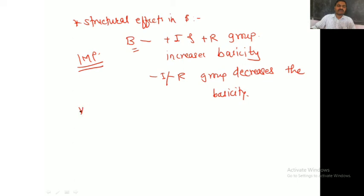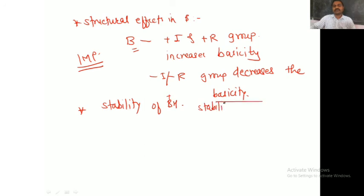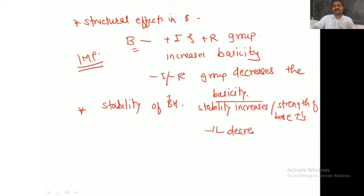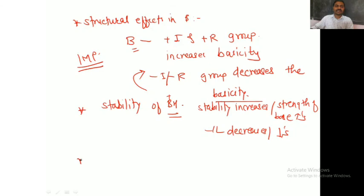The fourth factor is the stability of the conjugate acid BH⁺. As the stability of BH⁺ increases, the strength of the base increases. If the stability decreases, the base strength also decreases. The same structural factors that affect the base also stabilize the conjugate acid.